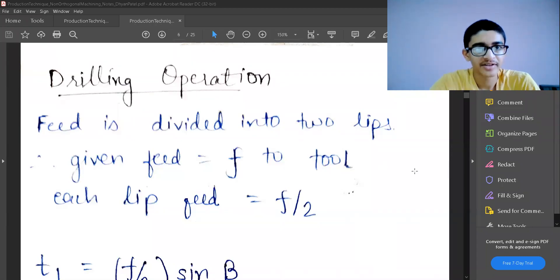Now let's start with drilling operation. Till now we have seen shaping and planning operations and turning operation. In the drilling operation, the feed is divided into two lips because the drill is coming downwards and there are two phases if we see the cross section. We will model in such a way that the feed is divided into two lips. Therefore, given a feed f to the tool, each lip is going to experience a feed of f by 2.